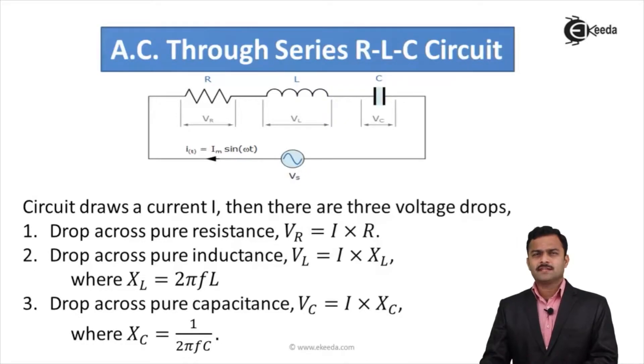I have drawn a circuit where all the passive components are connected in series RLC to the applied voltage V which is Vm sin omega t. This will draw current I.